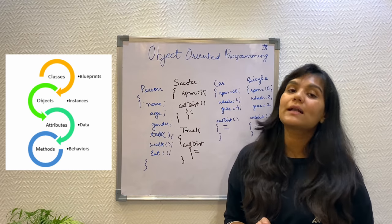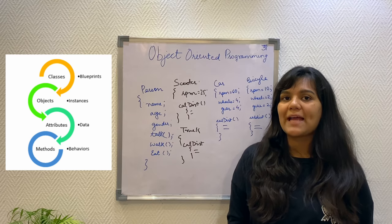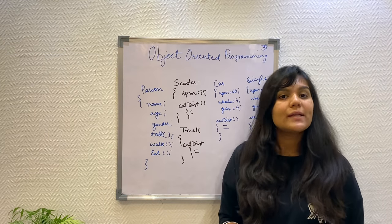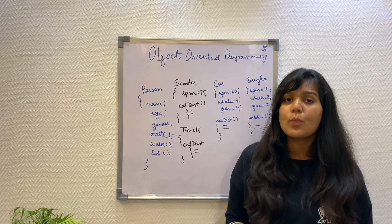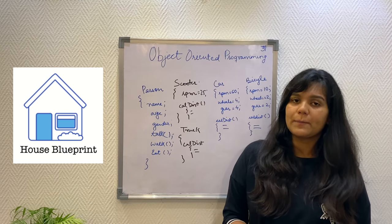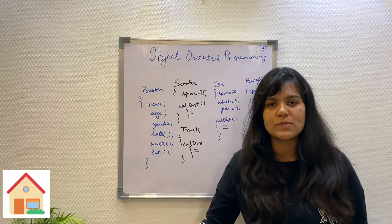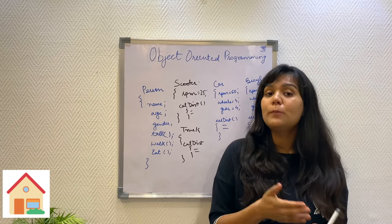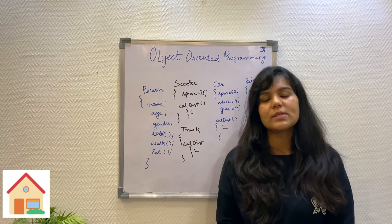Now what is a class? A class is a blueprint or a model that is used to instantiate or create objects. It does not exist physically. A very simple example is when we construct a house, we first create a house model or house blueprint and then using the same blueprint, we construct our actual house. Here, the blueprint of the house is the class and the actual constructed house is the object.